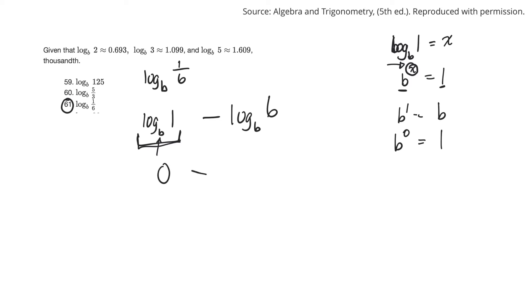Minus, then log base b of 6. They don't have 6 there. They just have 2, 3, and 5. But I do know that 6 is the same thing as 2 times 3. So I could write this as log base b of 2 times 3.